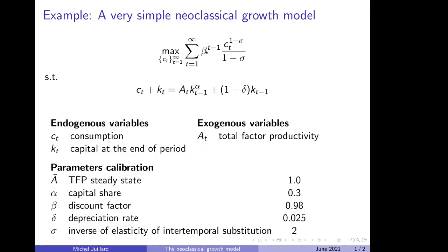Of course, agents cannot choose freely their consumption. They must satisfy the budget constraint that says that given the production made with stock of capital K to the power alpha and total productivity A. Note, by the way, that it is the same good that is used for consumption and for accumulation.